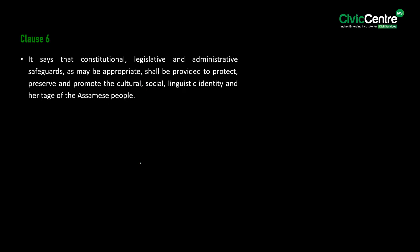Clause 6 of the Assam Accord specifically states that constitutional, legislative and administrative safeguards, as may be appropriate, shall be provided to protect, preserve and promote the cultural, social, linguistic identity and heritage of the Assamese people.